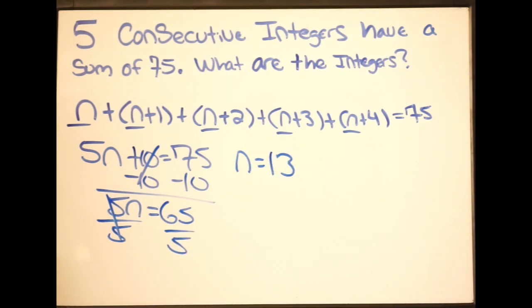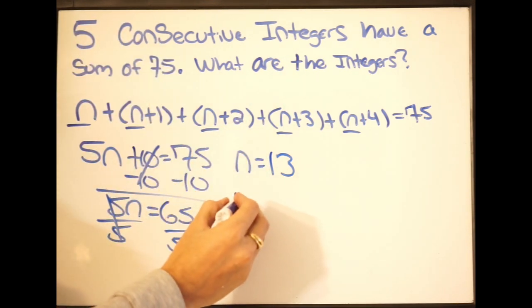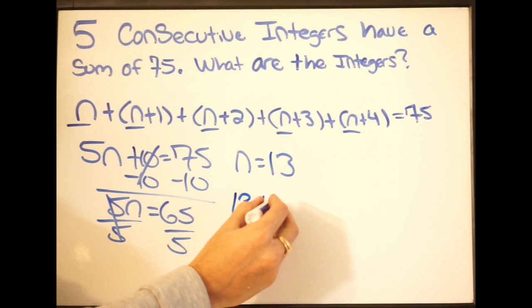Again, they want us to list the integers. So we know that our first integer is going to be 13. And then if we add 1, so let's make a list. We're going to get 13. Here, we get 14.